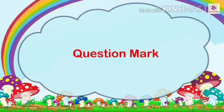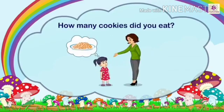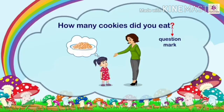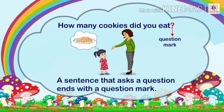Next, the question mark. See the sentence: 'How many cookies did you eat?' Here the sentence ends with a question mark — you are asking a question. Can you see the red symbol blinking? It is a question mark. A sentence that asks a question ends with a question mark.